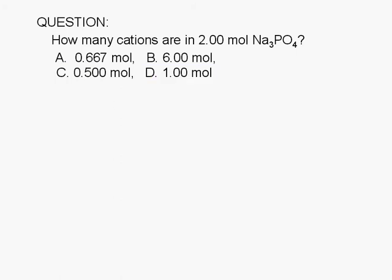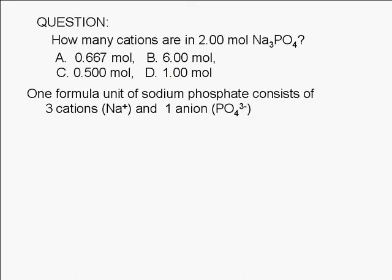Subscripts in a formula are also counting numbers. In the case of sodium phosphate, one formula unit of this compound consists of three cations. There are three sodium ions indicated in the formula, and one anion. There is one phosphate ion indicated in the formula.